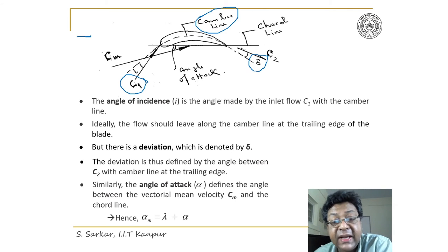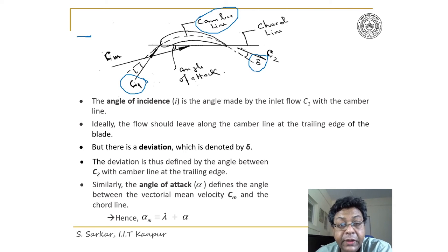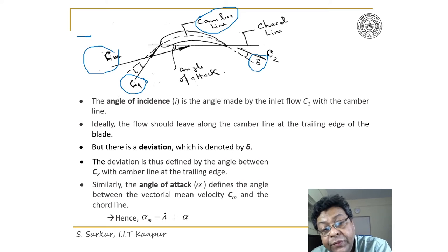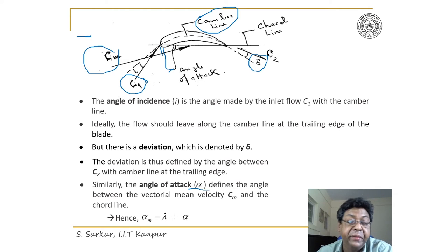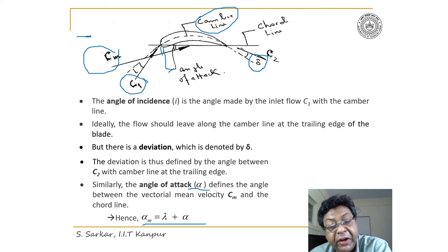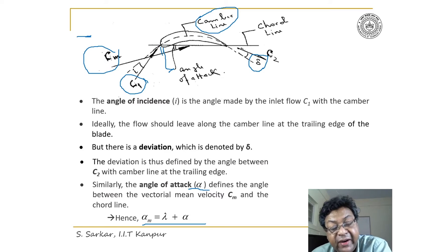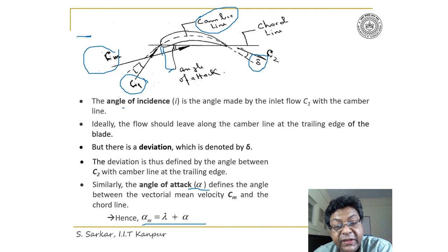The angle of attack is the angle between the vectorial mean velocity cm and the chord line. This angle is denoted by alpha. Alpha m, the vectorial mean angle, can be given as lambda plus alpha, where lambda is the stagger and alpha is the angle of attack. Thus, angle of incidence i, deviation delta, and angle of attack alpha are three very important parameters in cascade nomenclature.